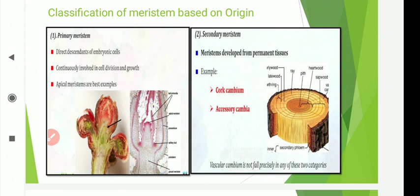Secondary meristem arises from permanent tissue or primary meristem and in due course of time develops into a mature plant body. Some cells produced from primary meristem as permanent tissue regain the power of cell division and become meristematic — they arise from tissue which is not of meristematic origin. For example, cork cambium, interfascicular cambium in medullary rays, or intrafascicular cambium in vascular bundles.